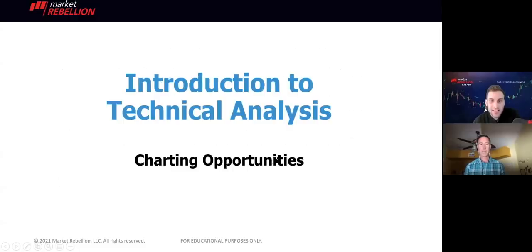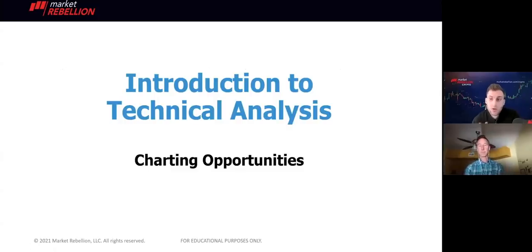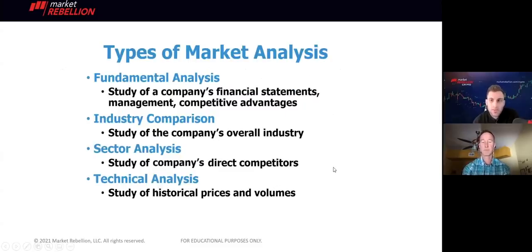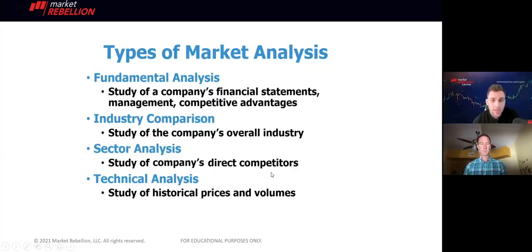I want to start with just the basics to get an understanding of what exactly technical analysis is for the person who is absolutely brand new. First thing I'll say is that in my own trading, I think technical analysis is only about half of the battle. I like to use fundamental analysis as well as some others. There are four primary types of analysis: fundamental, which is typically a company's financial statements — in Bitcoin or crypto, this could be on-chain volume or metrics; industry comparison; sector analysis; and of course technical analysis, which is the study of historical prices and volumes.